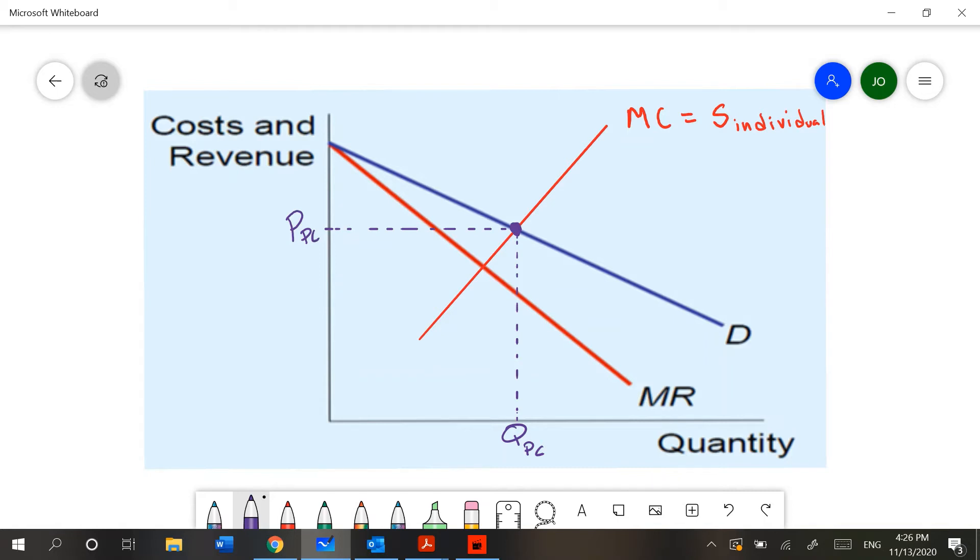Furthermore, we can label our consumer surplus using this graph. Remember that consumer surplus is everything above price and below demand. So, under perfect competition, my consumer surplus looks something like this.